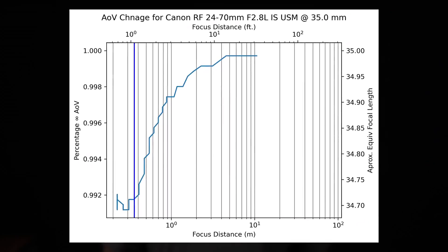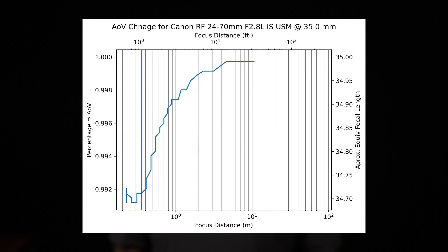But at 35 millimeters, the total is even lower, coming in at most 1% wider than listed. This translates to an angle of view equivalent of 34.7 millimeters at the minimum focus distance.